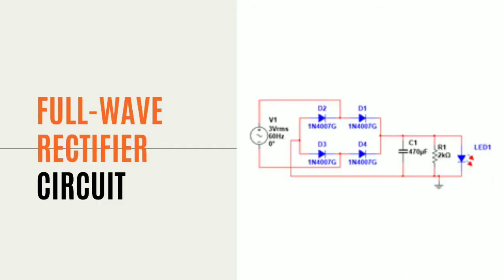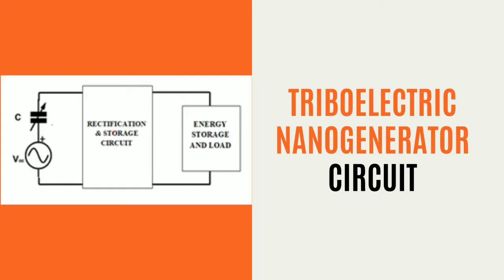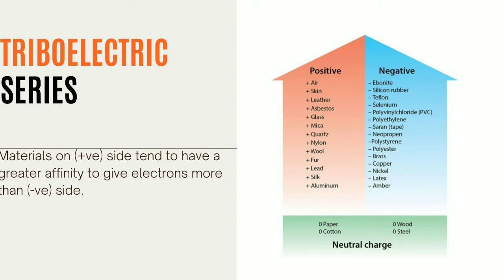This is a design of a full wave rectifier circuit. The triboelectric nano generator circuit consists of three ball electric materials, electrification and storage circuit, and energy storage for the load. The method used was guided by the triboelectric series, where materials on the positive side tend to have a greater affinity to give electrons more than the negative side. The chosen materials are aluminum and copper, with aluminum on the positive side and copper on the negative side.